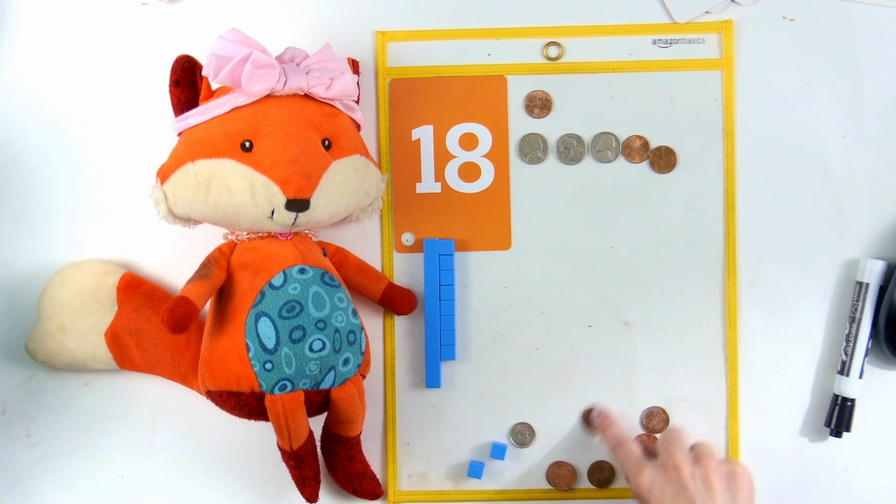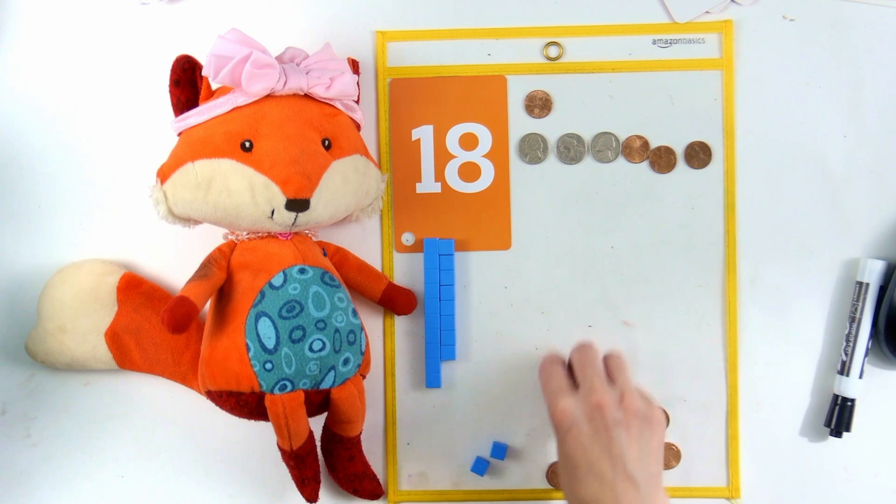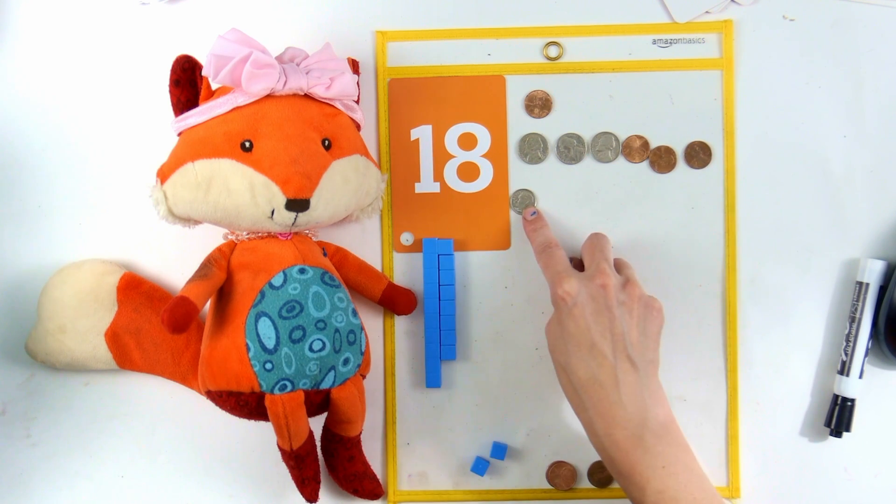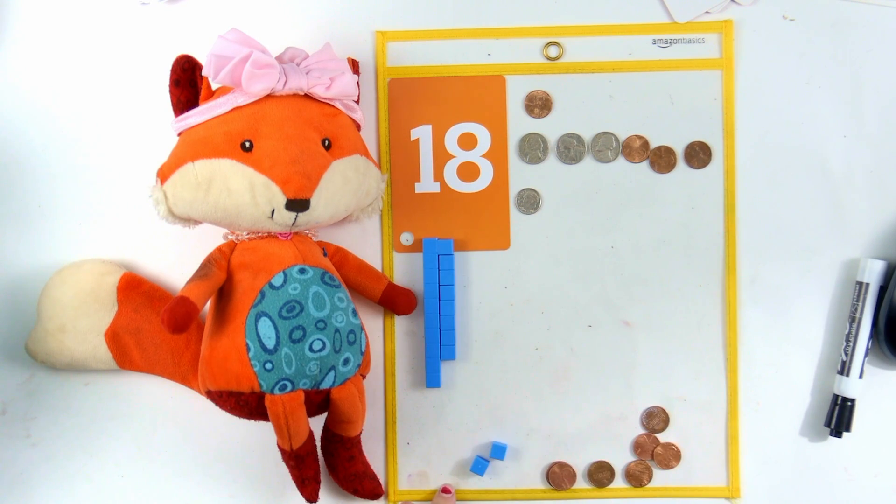That's 16, 17, 18. That's right. You're going to find three nickels and three pennies. Or, you can find a dime and eight pennies! That's right.